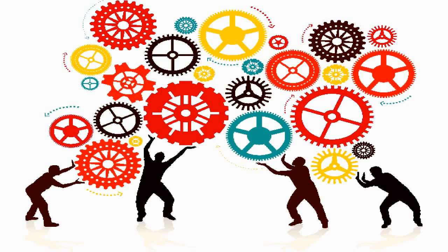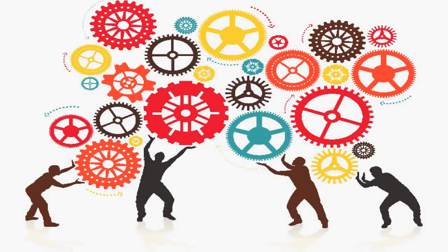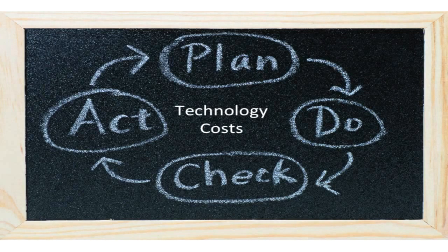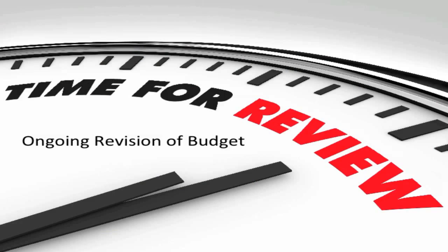Build community support and identify local funding options and resources. Develop a multi-year plan to support sustainability of technology costs. Conduct an ongoing review and refining of your budget as you move through the stages of implementation. Refer to the tools and templates provided in Unit 4 in the Learning Center on the Center for Technology and Disability website to support your work.